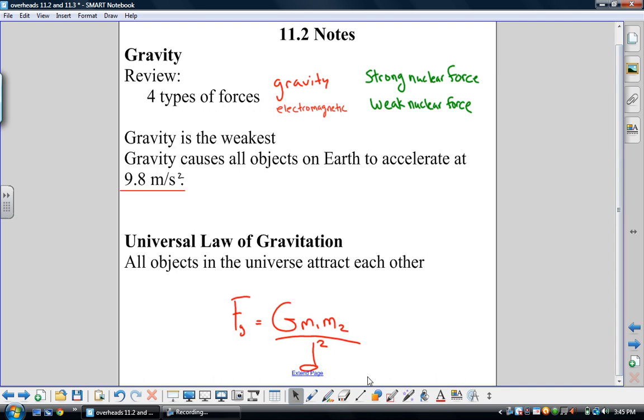Students do not need to memorize this equation, but I wanted them to see it. The force of gravity is equal to, this big G is a constant, which means it is always the same value in the same units. The mass of the first object times the mass of the second object divided by the distance between them squared. So as the masses of the objects involved get bigger, the gravity gets bigger. As the distance between them gets bigger, the gravity gets smaller. This is really common sense, most of the students know this and are aware of this.